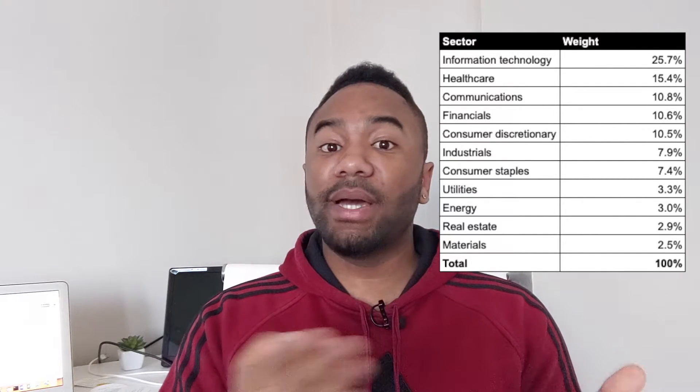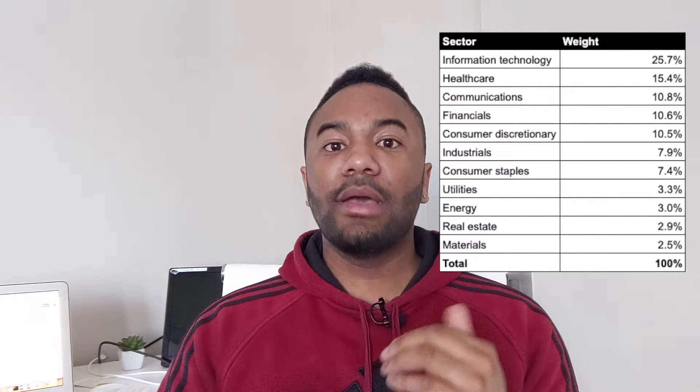Looking at the S&P 500 weight by sector, information technology makes up almost 26%. So if you're investing in an index fund, that's what your allocation will look like. That's way too aggressive for me — I have information technology at only 6%. I'm not telling you not to invest in an S&P 500 index fund; I invest in one from Vanguard myself. But you need to pay attention to what you're investing in by sector, because information technology gets hit the hardest in an economic downturn.